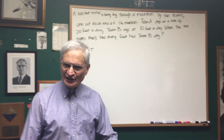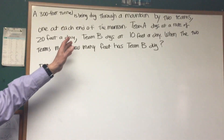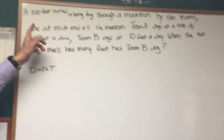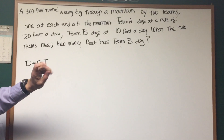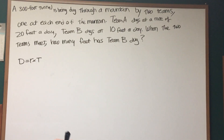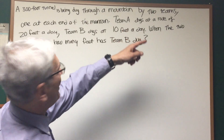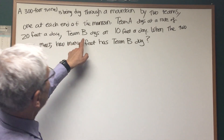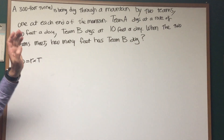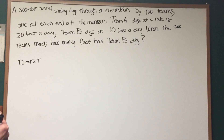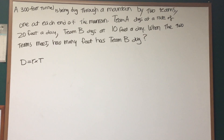Hi, Professor Blois here. This actually turns out to be a very easy problem. Let's read the problem together. A 300-foot tunnel is being dug through a mountain by two teams, one at each end of the tunnel. Team A digs at a rate of 20 feet a day. Team B digs at a rate of 10 feet a day. When the two teams meet — meaning when the tunnel is complete — how many feet has Team B dug?